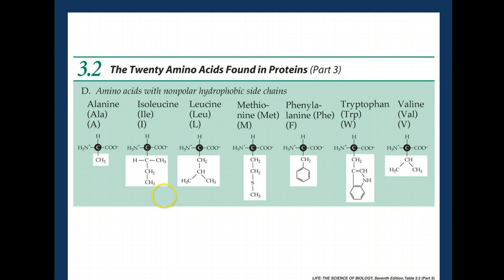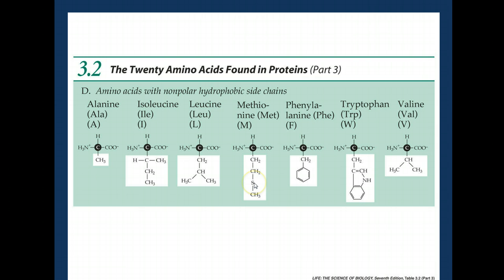The nonpolar hydrophobic side chains, as you would expect, are pretty much nothing but carbon. In one case we've got some nitrogen, but this nitrogen is overwhelmed — sort of lost in a sea of carbon. So the overwhelming chemical entity here, because it's mostly carbon and hydrogen, is hydrophobic. The sulfur here, because it's covalently bonded to two carbons and not on the end, does not form any cross-links with anything else in methionine.